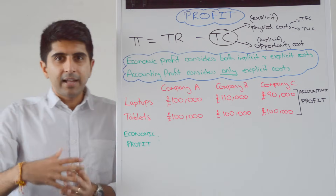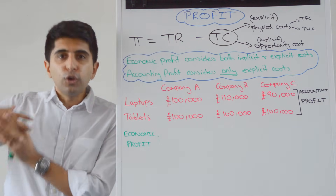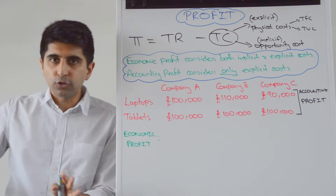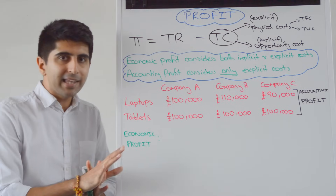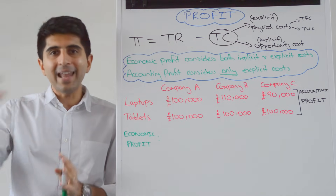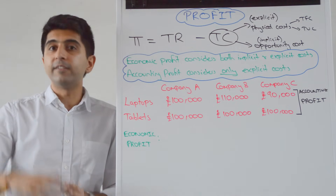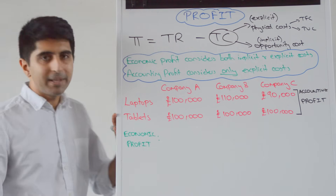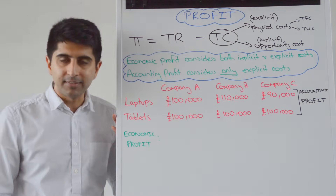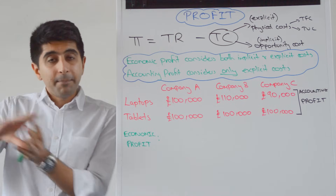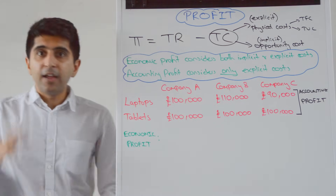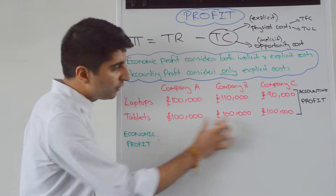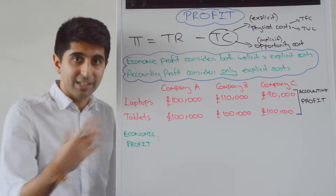These companies could have also made tablets. They're not at all — they're only making laptops — but their next best alternative, their opportunity cost, would have been to make tablets instead. And if they made tablets, their accounting profit would have been £100,000 in each case.